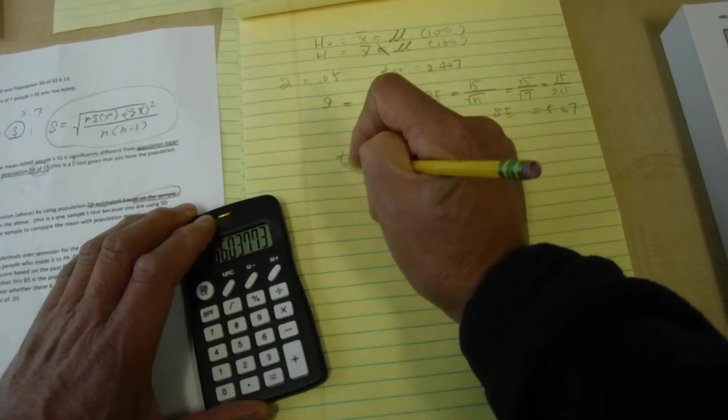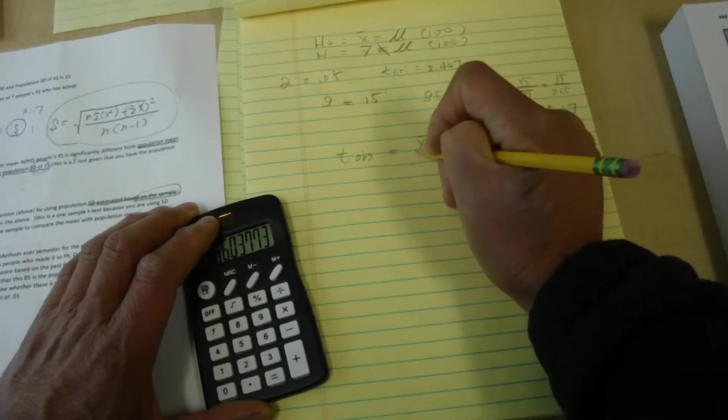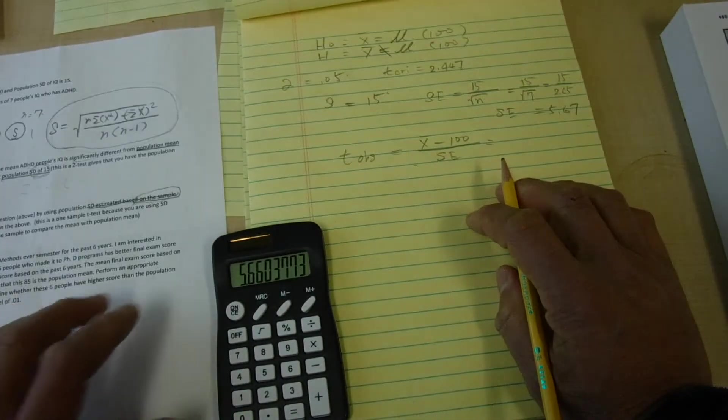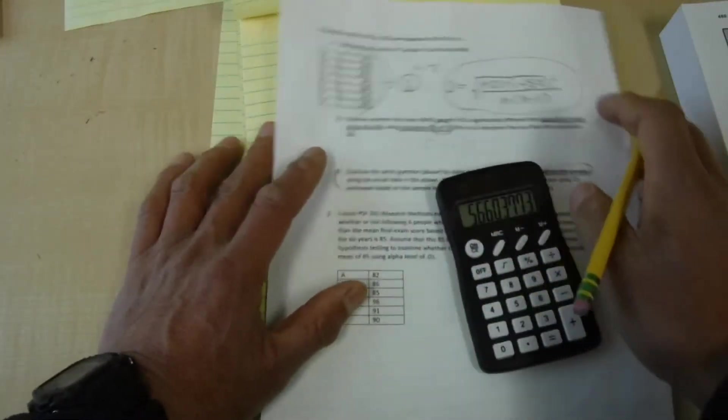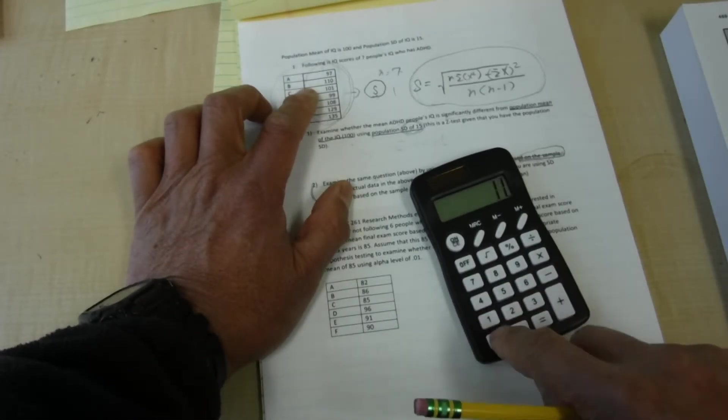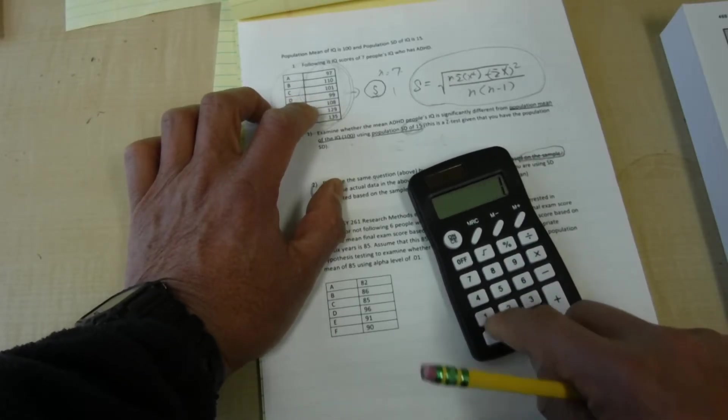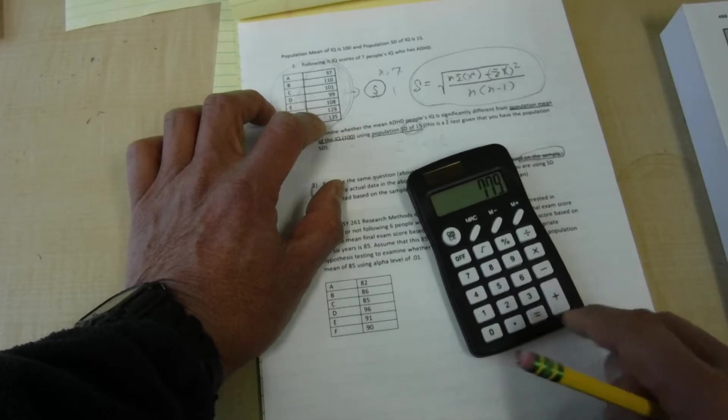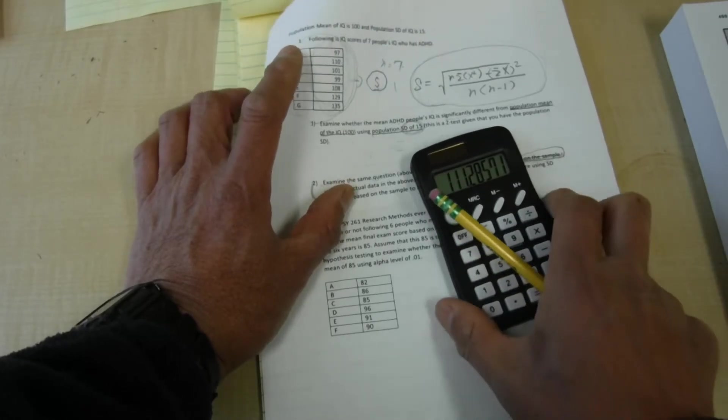So therefore, t observed equals x bar minus 100 divided by standard error of x bar. And x bar is we already know what was x bar. So let me actually compute it quickly. So 97 plus 110 plus 101 plus 99 plus 108 plus 129 plus 185, divided by 7, equals 111.29.